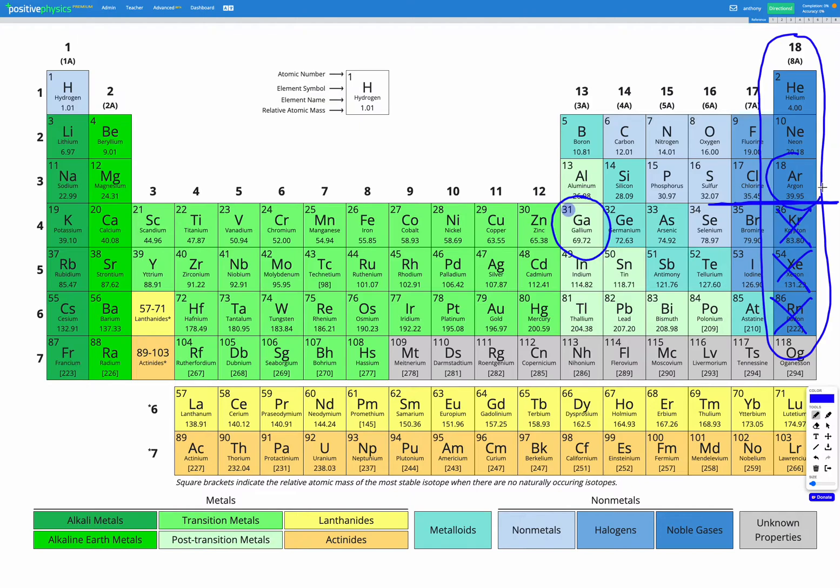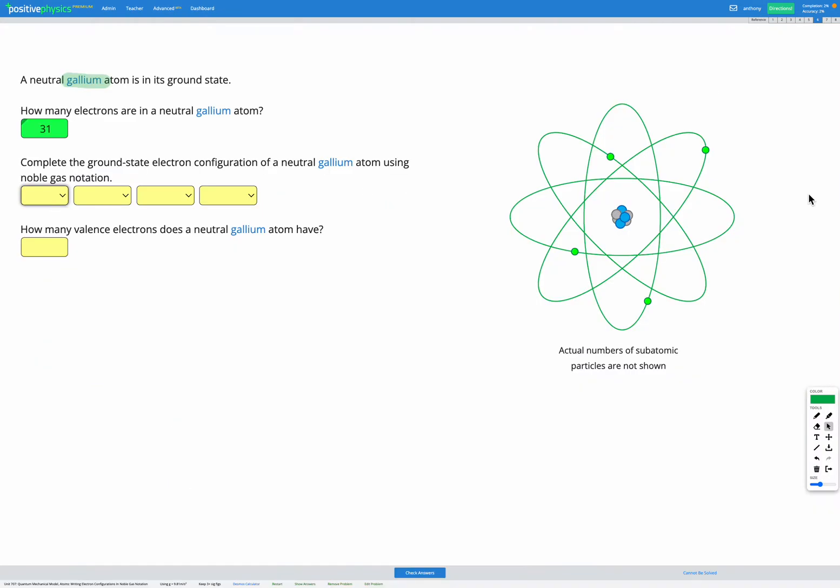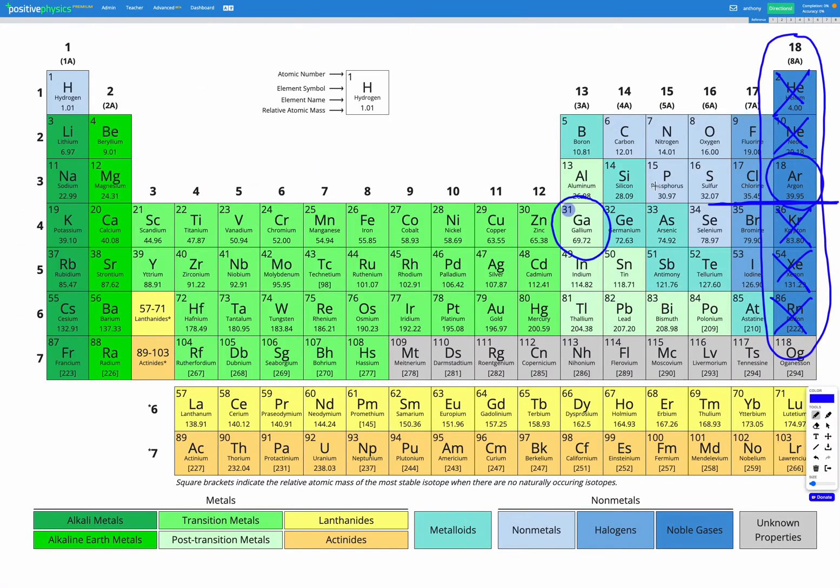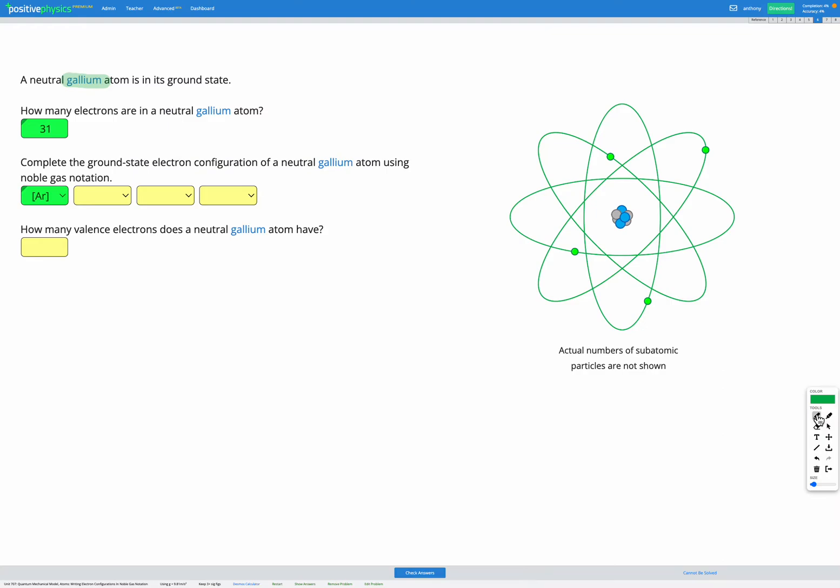So it's not going to be krypton or any of these higher up, xenon or radon. Argon, however, argon has 18 protons and therefore 18 electrons in the neutral atom, which is less than 31, which is how many gallium have. So argon would be a good choice for the noble gas that has less electrons than gallium, but still the largest number possible. We wouldn't want to choose helium or neon because even though they have less electrons, we'd still end up writing out a bunch of things we didn't need to because argon has the highest number available that's still less than that in our element.